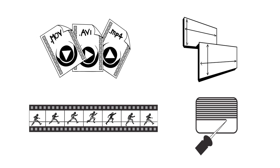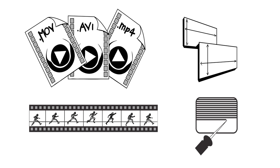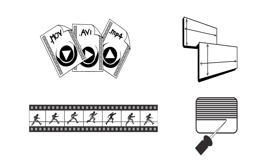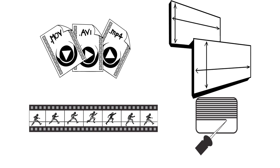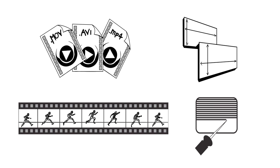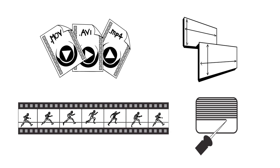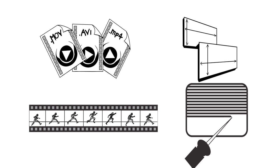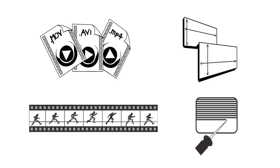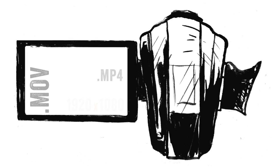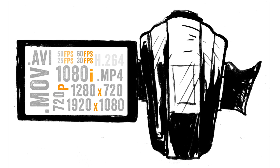Four key characteristics of video are Format, Frame Size or Resolution, Frame Rate, and Scan Method. Some cameras allow you to choose between multiple options for each.